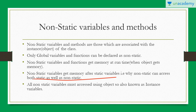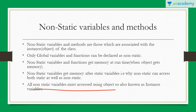Since non-static variables and methods get memory after static variables, they can easily access static variables and methods as well. Non-static variables must be accessed using an object, which is why they are also known as instance variables — instance means object. All static variables are known as class variables and all non-static variables are known as instance variables.